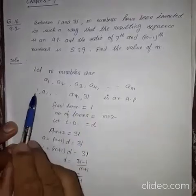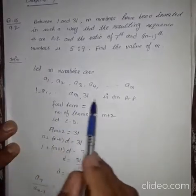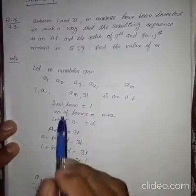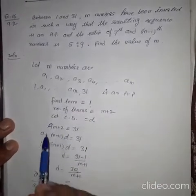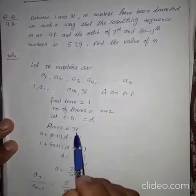And whose first term is 1, number of terms are M plus 2, and let common difference is D. So AM plus 2, that is equal to 31.